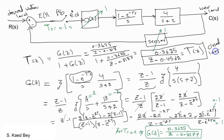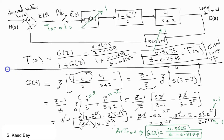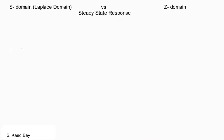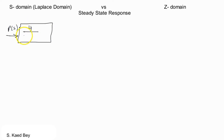This is the closed-loop transfer function. The closed-loop transfer function in the continuous S-domain, T(S), can be shown as such. And the closed-loop transfer function in the Z-domain can be shown as such.